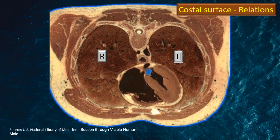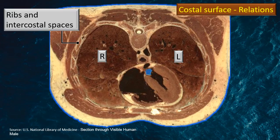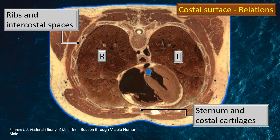Here is a cross-sectional photograph of the thorax region. You can see the right lung and the left lung in cross-section. You can also see the ribs and the costal cartilages, because they are the main relations of the costal surface. In front you can see the sternum and the costal cartilages. Remember, the anterior border of the lungs is closely related to these structures.